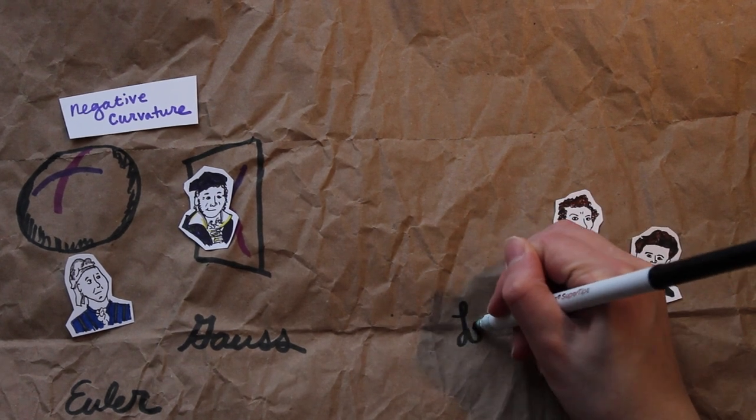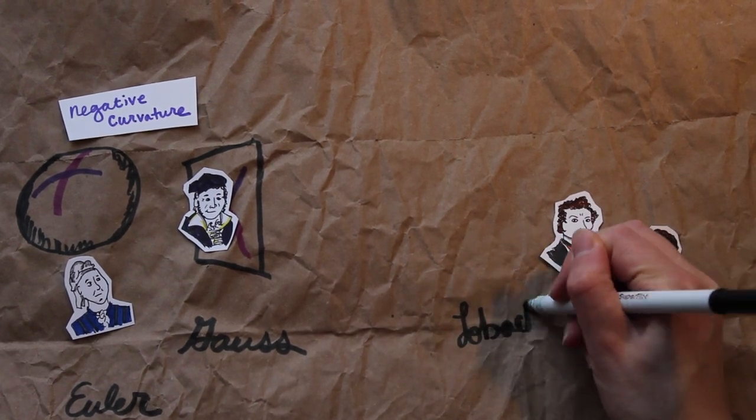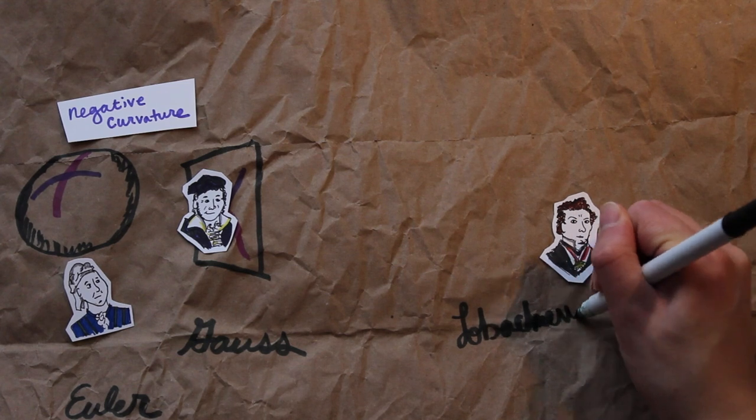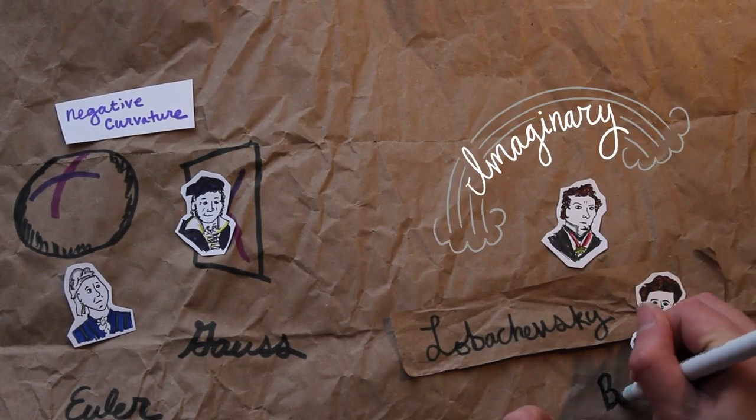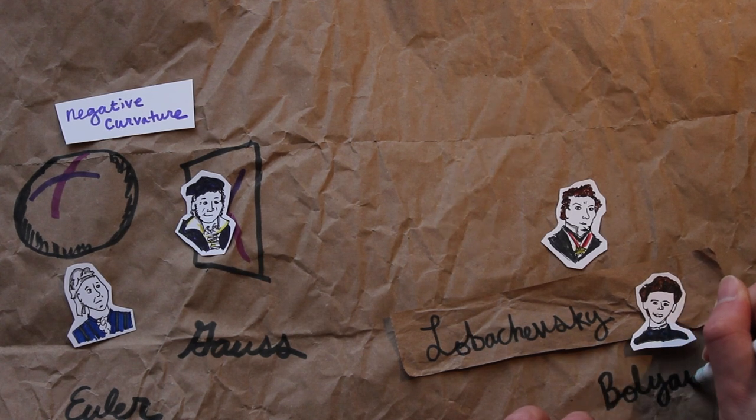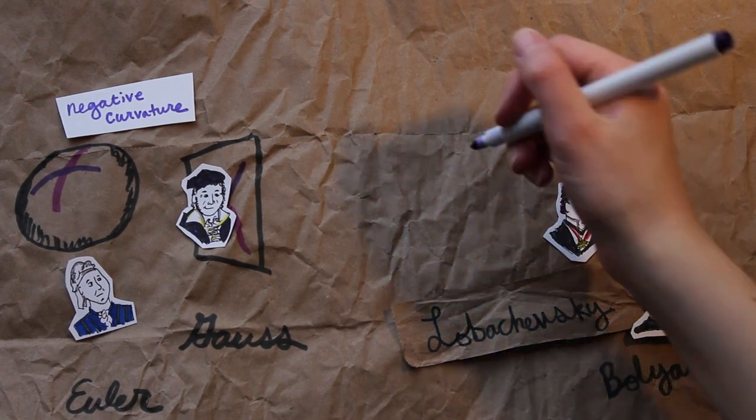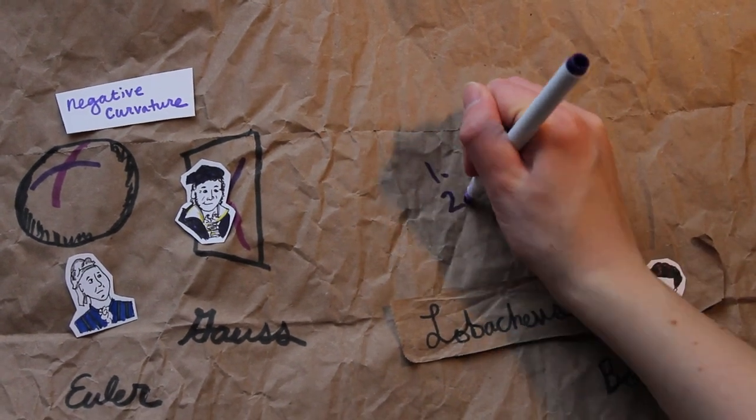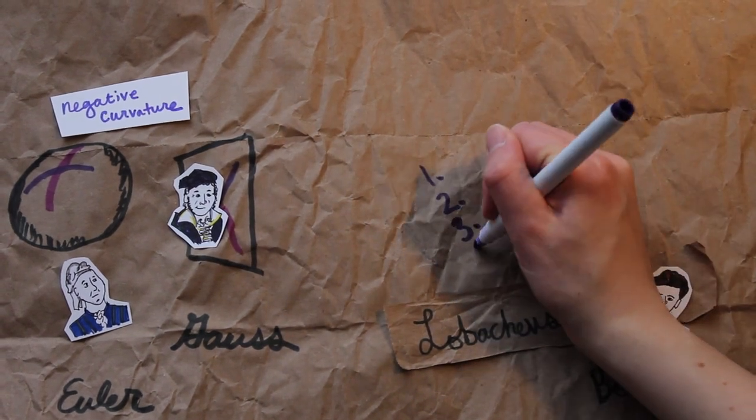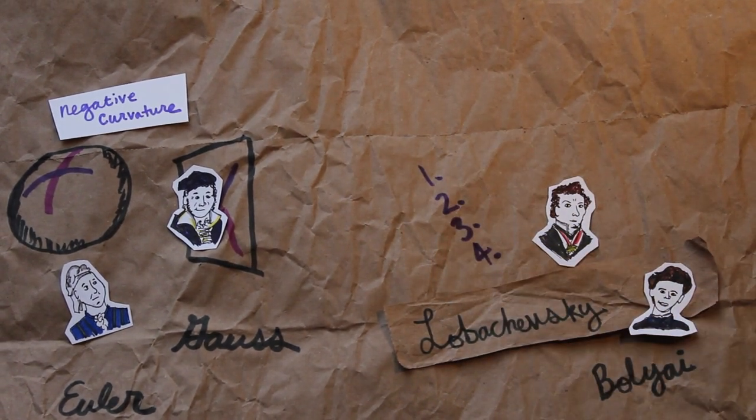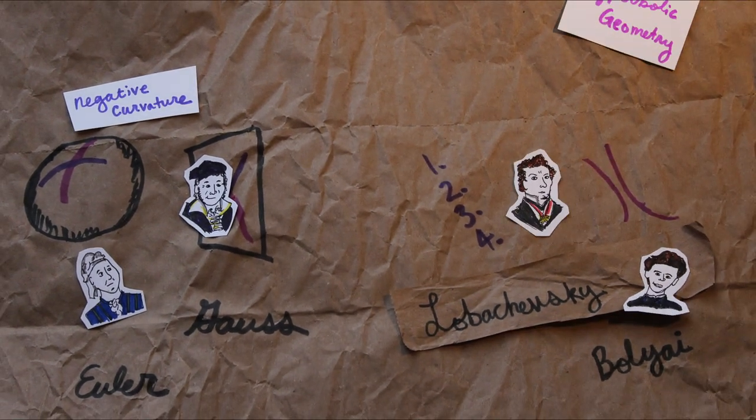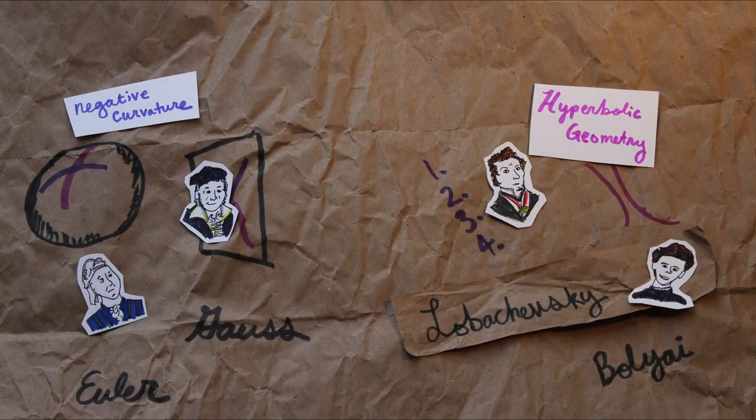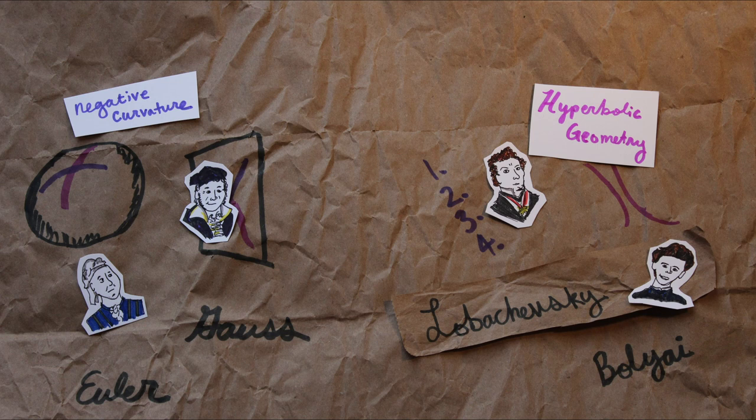On the other hand, Nikolai Lobachevsky and Janos Bolyai were studying a system of axioms that Lobachevsky called imaginary geometry. Later, it would come to be known as hyperbolic geometry. They took Euclid's framework and considered what would happen without that problematic parallel postulate. Gauss had actually thought about these ideas as well, but he decided never to publish his work on it.